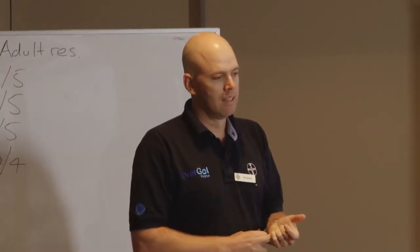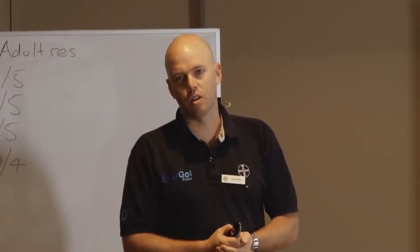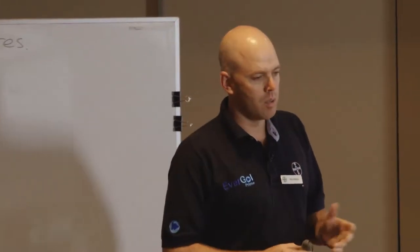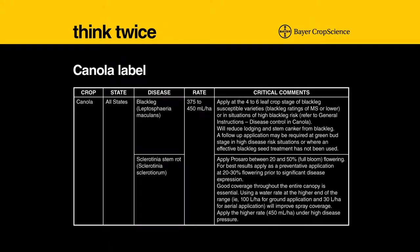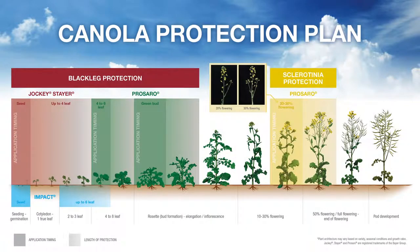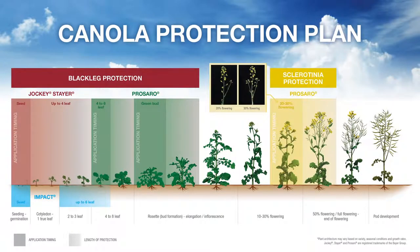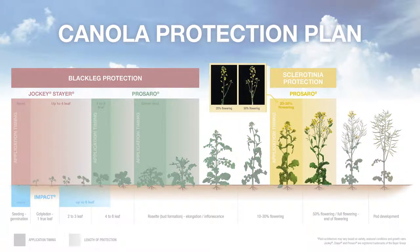When it comes to canola, 'think twice' could refer to a seed treatment or in-furrow plus a foliar, or it could refer to cultural practice plus fungicides, depending on how you approach it. This is the current Prosaro label going into this season — we've got 375 to 450 mL rates and different timings for different diseases. From a fungicide management perspective, this gives us different windows for Prosaro blackleg applications. This is where we start to think twice — particularly in northern areas where sclerotinia is appearing — deciding when to deploy our blackleg spray if we also have to spray for sclerotinia.